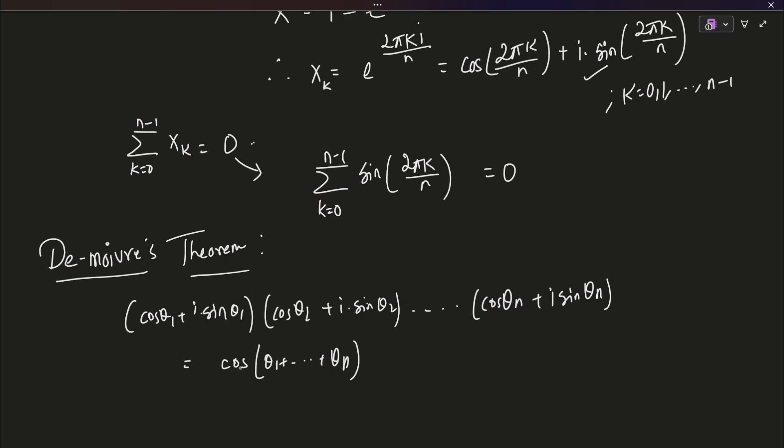And, this is equals to basically cos of theta 1 plus dot dot theta n. Basically what happens is that it all multiplies down to expression of the same form where the angles are basically added. This is something you can prove yourself using Euler's formula. You can prove it using Euler's formula. And, that will complete the theory session.